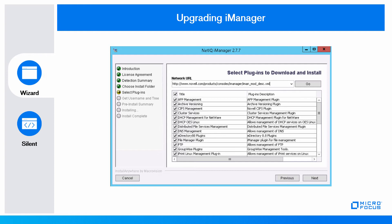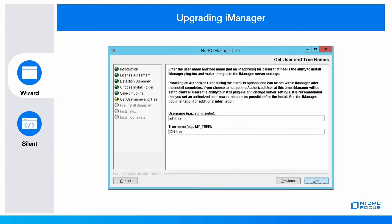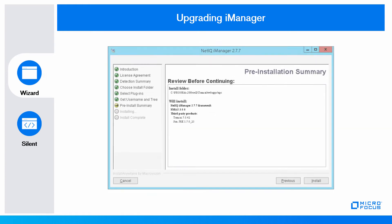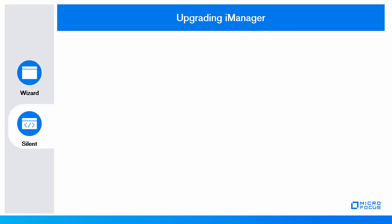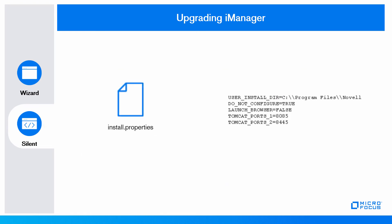You can install all the plugins at once or select the required plugins to upgrade. Enter the user name and tree name. Review the pre-installation summary page before installing. In silent mode, find the install.properties file at the specified location. In the install.properties file, mention the path where the previous version of iManager was installed and the Tomcat port numbers.